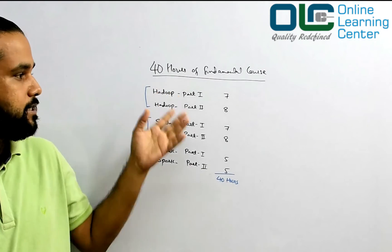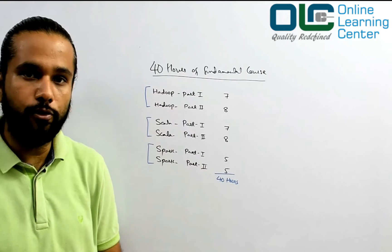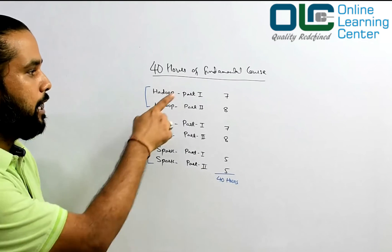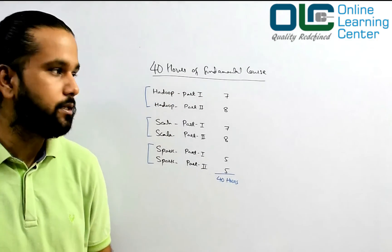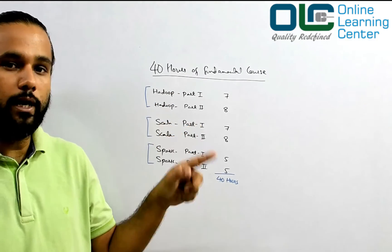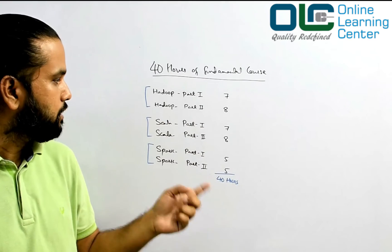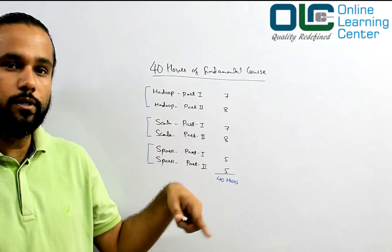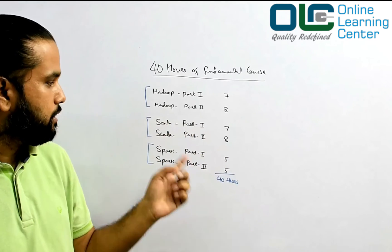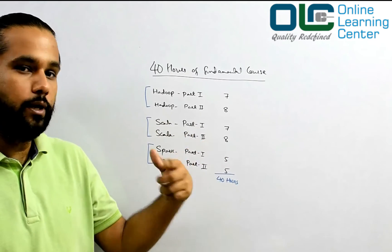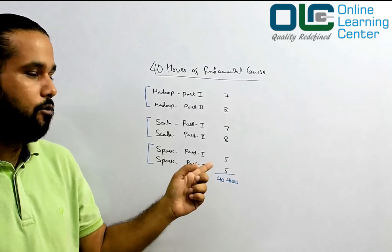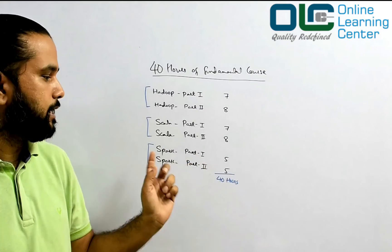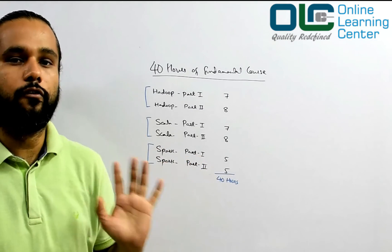We have divided this program into modules. Part one is seven hours, part two is another eight hours, Scala part one is seven hours, Scala part two is eight hours, Spark part one is five hours, and Spark part two is five hours. That's how we have created this 40-hour model.